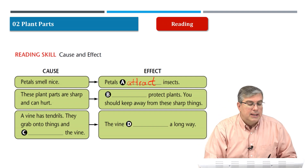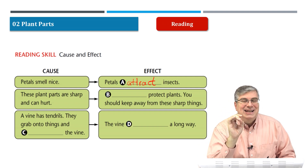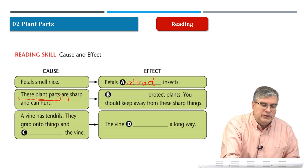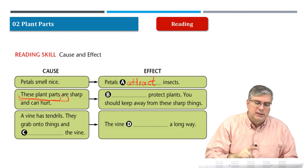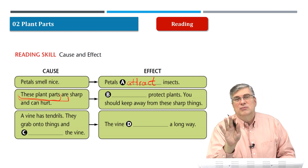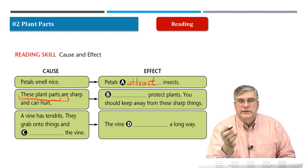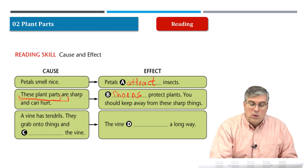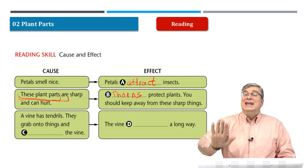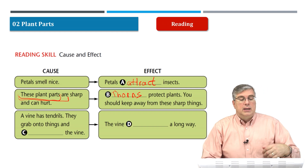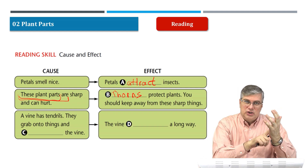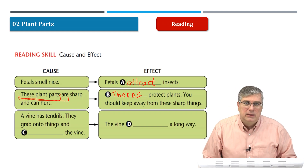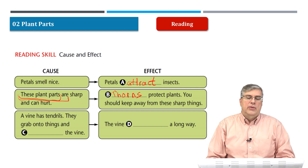The second cause: these plant parts are sharp and can hurt. What plant parts? Those are thorns. Thorns are sharp and they can hurt — they protect plants. You should keep away from sharp things. So the cause is: many plants have thorns that can hurt you. The effect is that thorns protect the plants. Plants don't want animals to eat them for water, especially in deserts where there is no water. So thorns protect them.